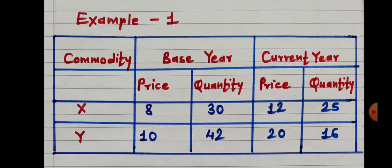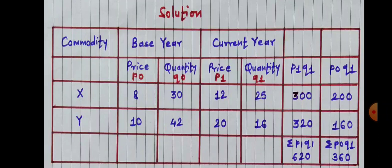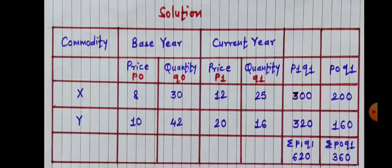Let us see how to construct Paasche's price index number with the help of an example. In this example, two commodities are given: X and Y. In the second column, base year prices and quantities are given, and in the third column, current year prices and quantities are given. We have to add two additional columns: P1Q1 and P0Q1. Base year prices are denoted by P0, base year quantities by Q0, current year prices by P1, and current year quantities by Q1. First step: find out P1Q1, i.e. P1 multiplied by Q1.